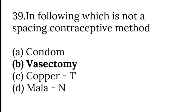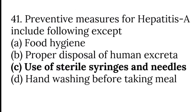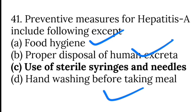Vasectomy is not a spacing contraceptive method. Among contraceptive methods used by males, Mala N is not used by males. Preventive measures for Hepatitis A include food hygiene, because it spreads via fecal-oral route, proper disposal of human excreta, and hand washing before meals. The use of sterile syringes and needles is not a preventive measure for Hepatitis A.